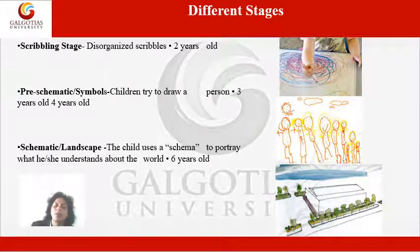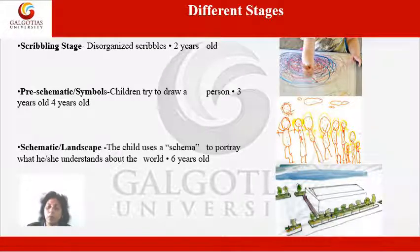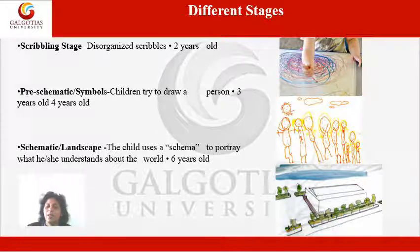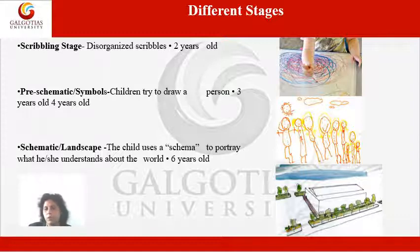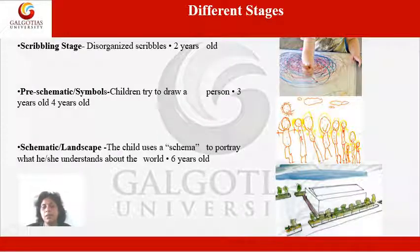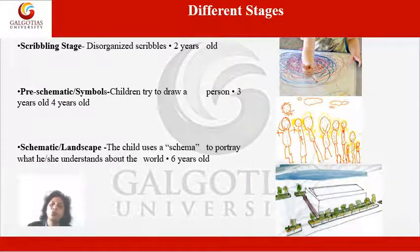Next, we have the pre-schematic or symbol stage, for the age group of three to four years old, when young ones know what is a circle, what is a rectangle, what is a square, and they prepare drawings like that. Next is the schematic landscape stage, where young ones understand about the world — they know what a tree is, what a river is, what a hut is, and they draw it. As they watch, they try to draw that.